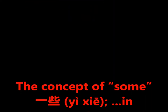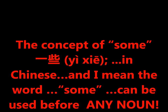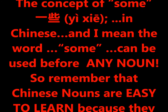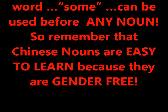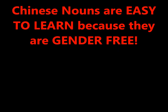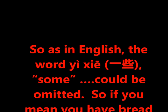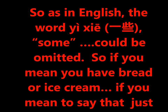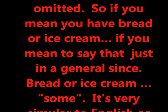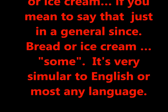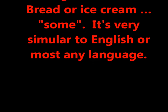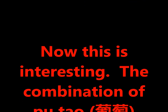The concept of 'some' in Chinese can be used before any noun. Chinese nouns are really easy to learn since they are gender-free. Just like in English, the word 'some' can be omitted — so if you mean bread or ice cream in a general sense, you can just say bread or ice cream without 'some.'